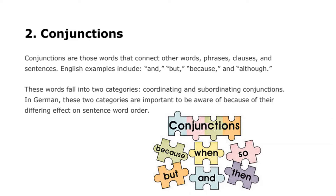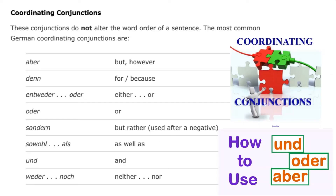Coordinating conjunctions join two independent units of meaning, while subordinating conjunctions allow you to join an independent and dependent clause. In addition to that, the very rules for word order will be temporarily suspended if you have one of these subordinating conjunctions — it's kind of like in the Mario franchise, if you get the star, you're invincible for a little bit of time, or you get the leaf in Mario Brothers 3, now you're a raccoon who can fly for a little bit.